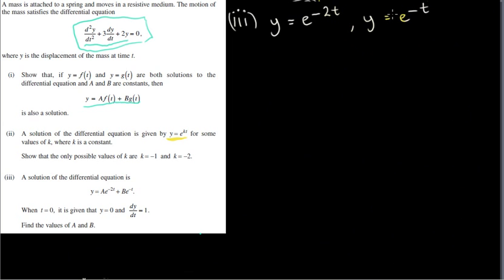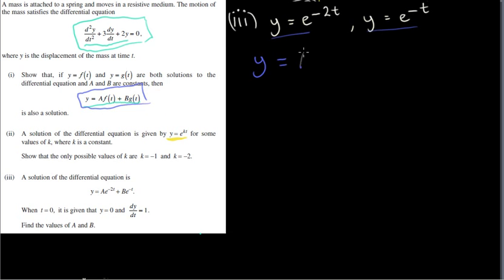So here are the results of the previous part — two solutions of our differential equation. In part 3, the general solution of the differential equation is y = a·e^(-2t) + b·e^(-t). That's just restating what we had in part 1: if f(t) and g(t) are solutions, then a linear combination of them is also a solution. So we're forming a linear combination of these two solutions, where a and b can be any numbers.